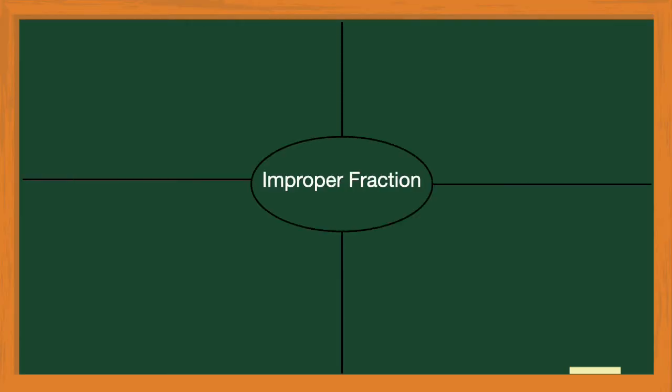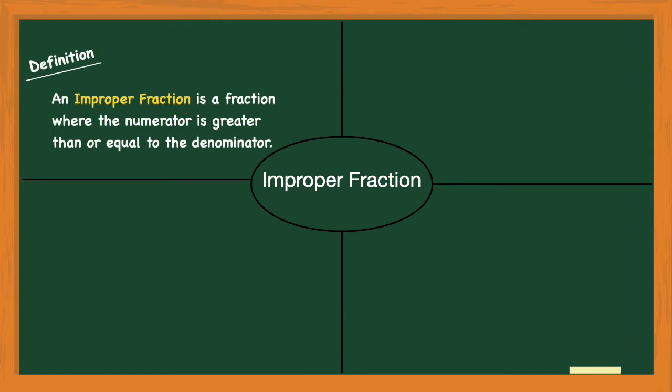So what is an improper fraction? Well let's look at the definition. The definition of an improper fraction is that it is a fraction where the numerator is greater than or equal to the denominator. And you'll remember that in a fraction the numerator is the top number and the denominator is the bottom number.